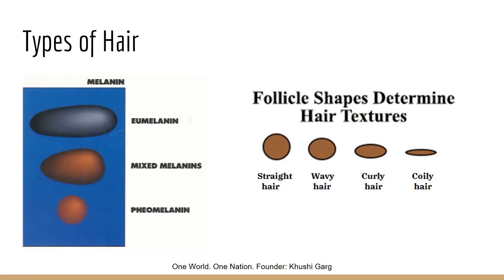In addition to hair color, there is also hair shape. Whether you have straight, wavy, or curly hair is determined by the shape of your hair follicle. Curly hair indicates a skinnier, more oval follicle, straight hair comes from a completely round follicle, and wavy hair falls somewhere in between.